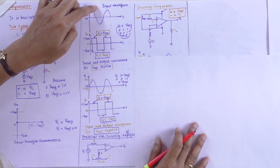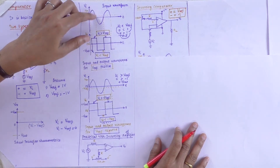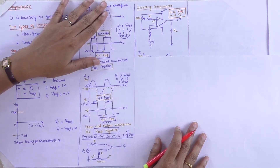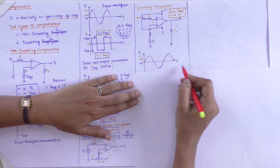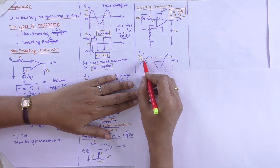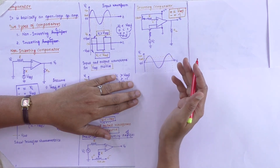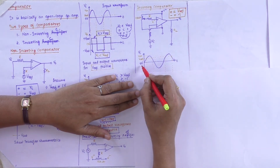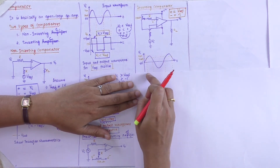Now we show the input and output waveforms for V reference as positive and negative voltage. First, we draw a sine input waveform assuming V reference as 1 V or 2 V, comparing with 0 V. In the inverting case, whatever output we got in non-inverting is just inverted — if it starts with a negative cycle in non-inverting, in the inverting amplifier it gets complemented.